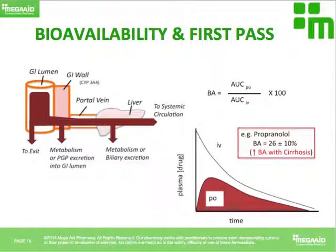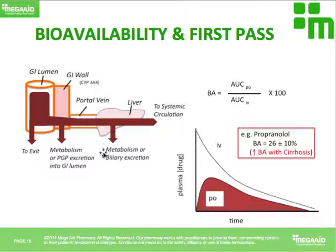To illustrate: when you eat a donut, it's digested and glucose molecules travel through the portal vein to the liver where glycogen is built for storage. The same process happens to drugs. Drugs taken orally go through the GI system, then travel to the liver via the portal vein, where they undergo two processes: they are metabolized, or they are excreted via biliary excretion. This means the portion reaching systemic circulation is much less than if you took the drug IV.